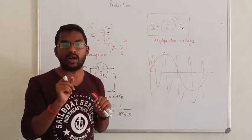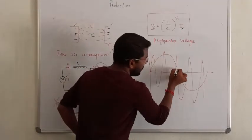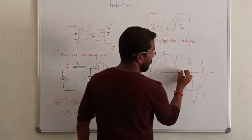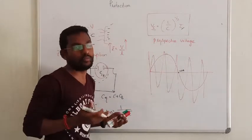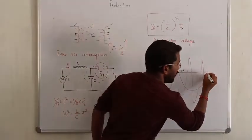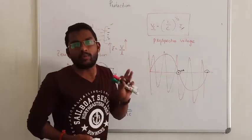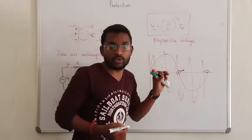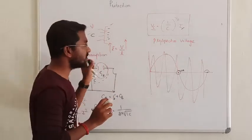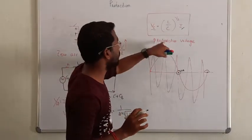This is called the current zero arc interruption point. When the current becomes zero at a point in the cycle, the prospective voltage is also zero. The arc is removed at that instant because the current in the arc is zero amperes. So we can avoid or remove the arc. Our main task is to remove the prospective voltage so that we can eliminate the arc between the circuit breaker contacts. This is the current zero arc interruption point.